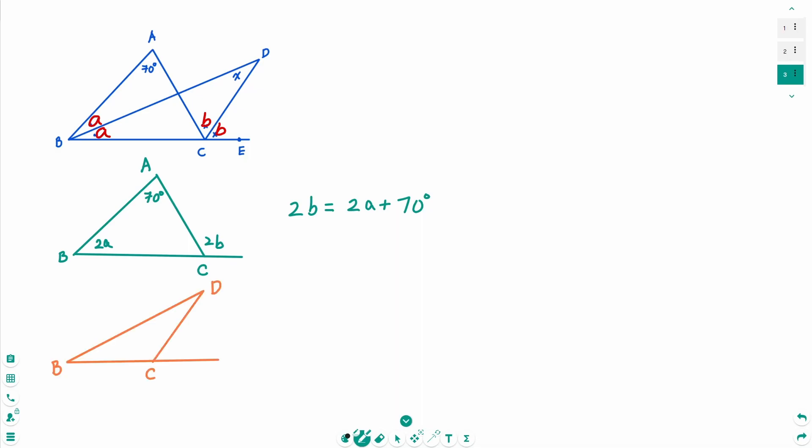In triangle DBC, then X, A, and B. Use the exterior angle theorem again. B equals A plus X. Then, times 2 on each side. 2B equals 2A plus 2X.